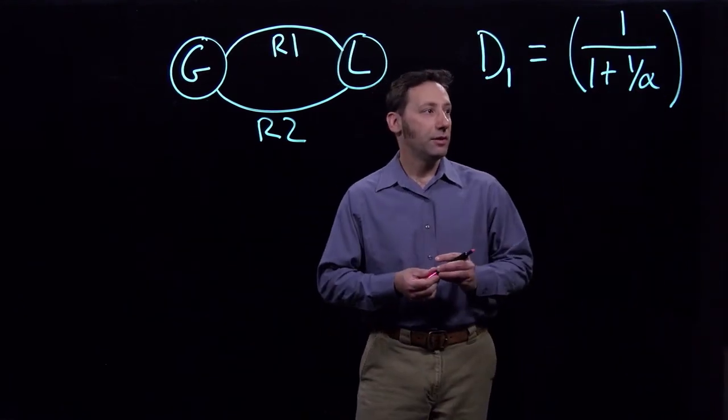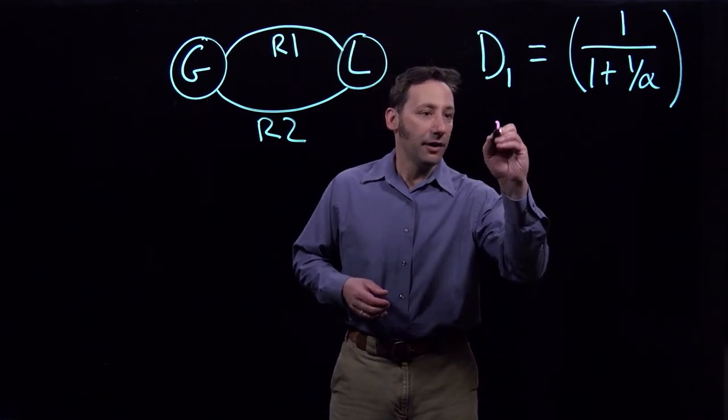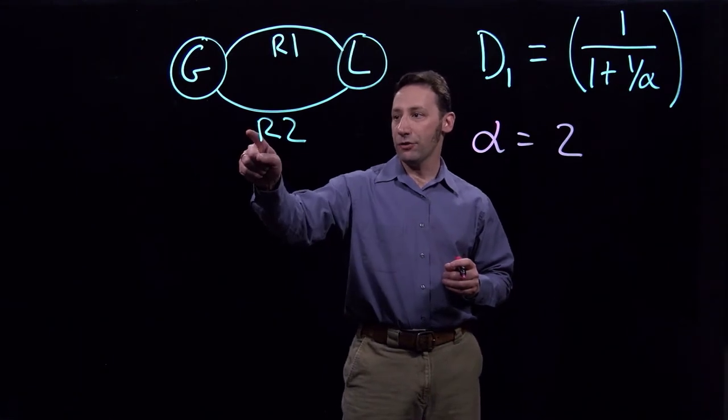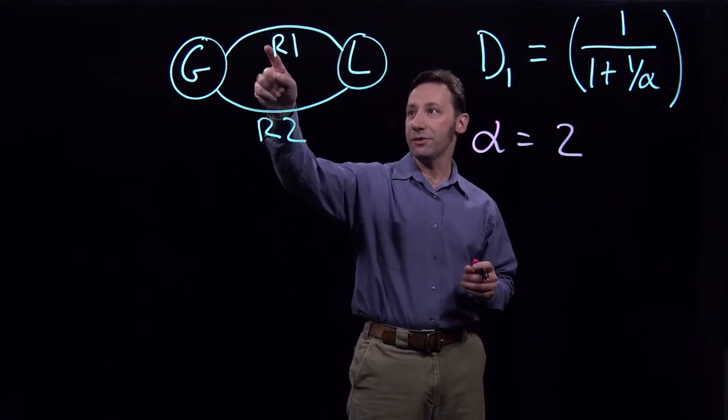So as a second example, let's take alpha is equal to 2. And so what this means is that the resistance of R2 is twice as big as the resistance of R1.